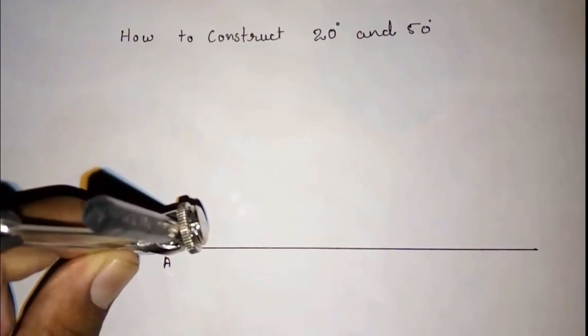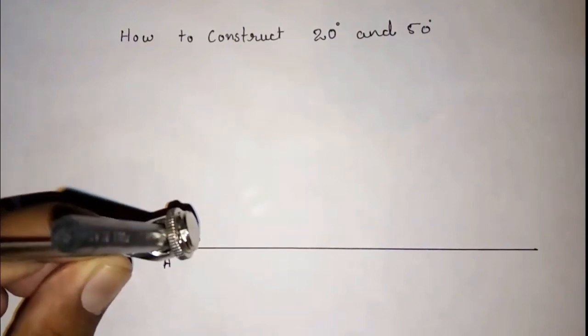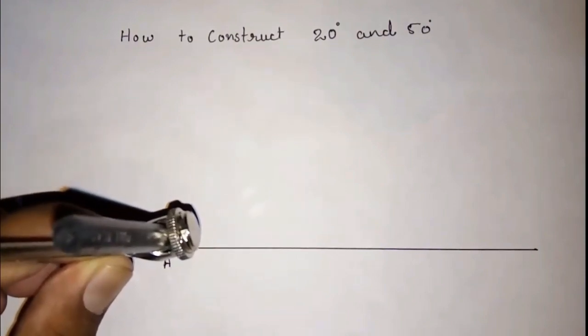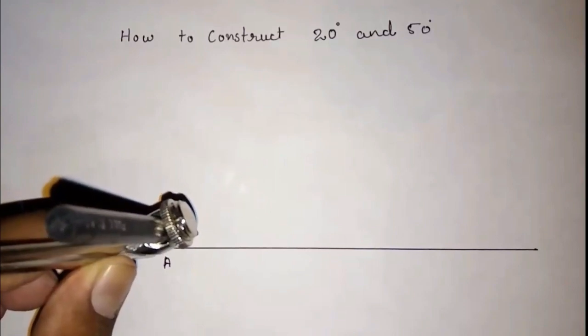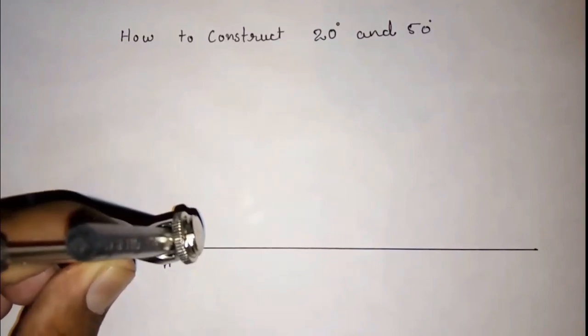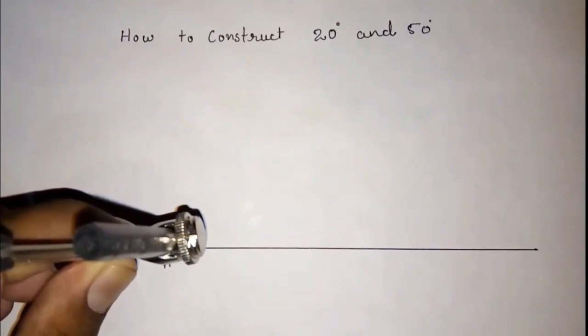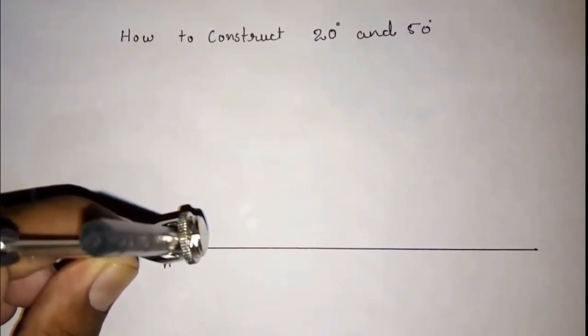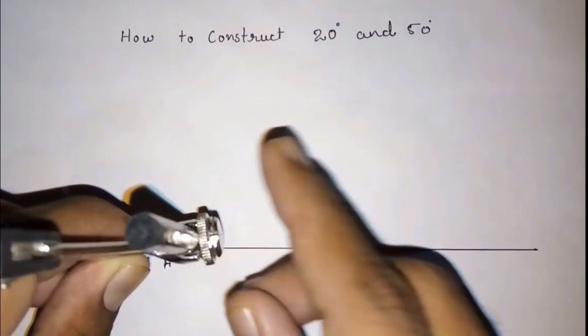Actually, I had explained in my previous video about how to construct 30 degree, 60 degree, 15 degree, 75 degree, 90 degree, and 120 degree. That is simple and I had explained. If you please watch that video, you'll know how to construct 60 degree.